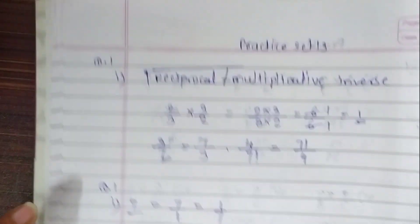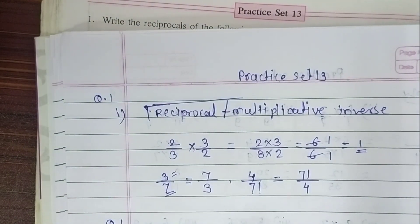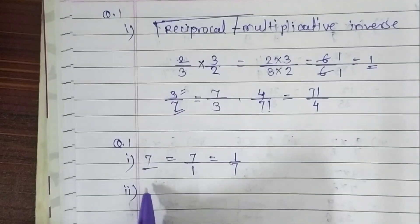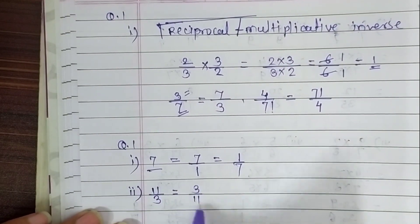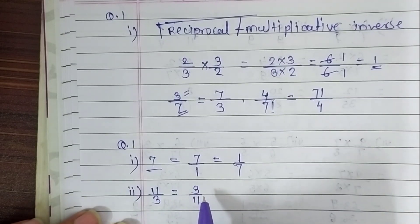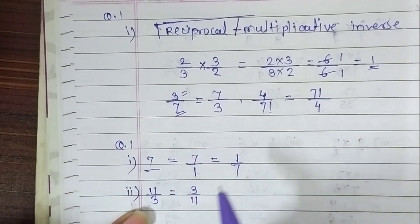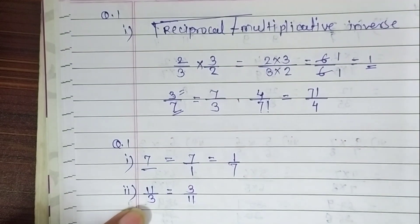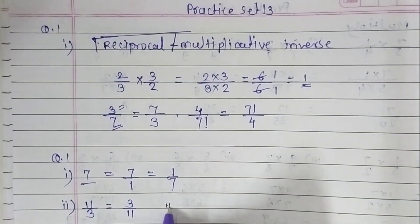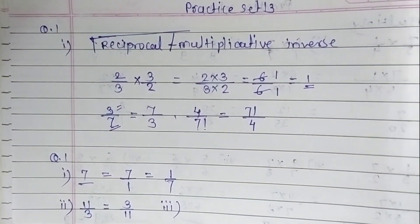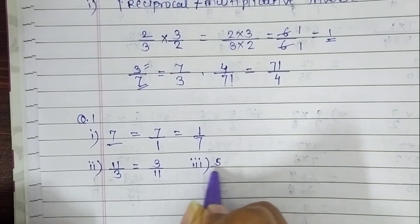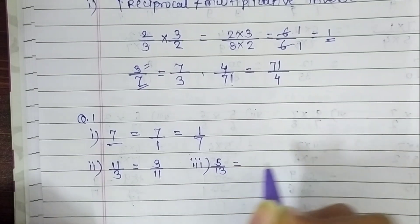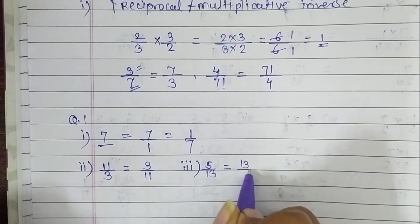The second sub-question is 11 upon 3. Here we have a fraction, so we just write it as 3 upon 11. This is the reciprocal of the given number — we just replace their places. The third one is 5 upon 13. The reciprocal of the given number is 13 upon 5.